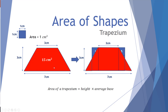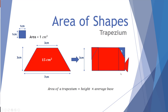A trapezium has two parallel lines with the sides joining them on the left and right. Drawing a three by five rectangle underneath, if we go halfway from the edge of the short parallel line to the edge of the long one and cut it, rotating and moving that piece shows it fits in perfectly to form a three by five rectangle. So the area of a trapezium equals its height multiplied by the average of its two parallel bases — the average of the seven and three.